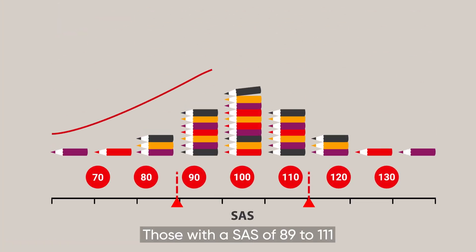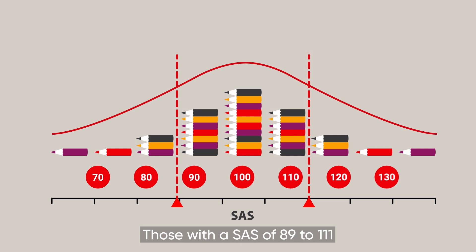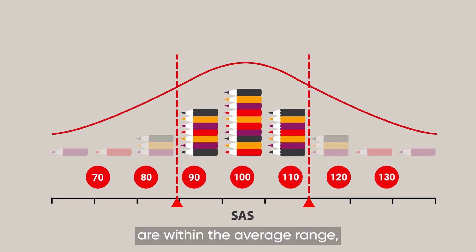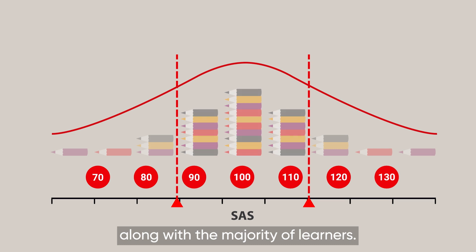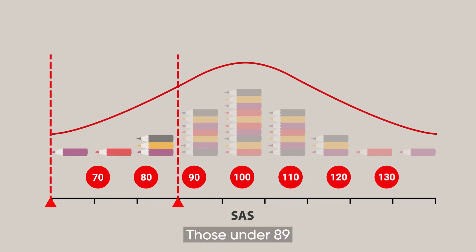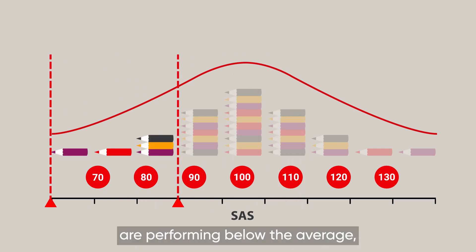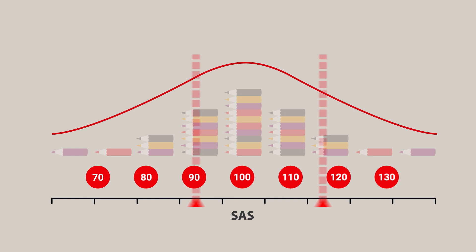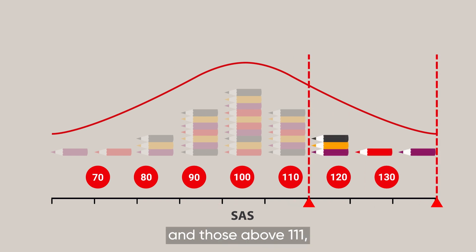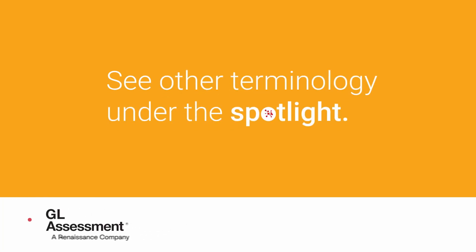Like with heights, those with a SAS of 89 to 111 are within the average range, along with the majority of learners. Those under 89 are performing below the average, and those above 111 are performing above average. See other terminology under the spotlight.